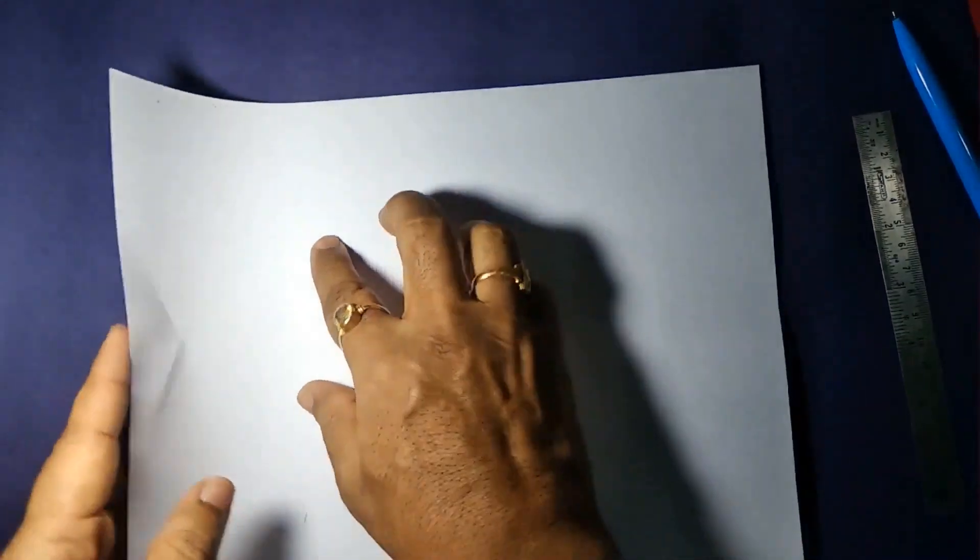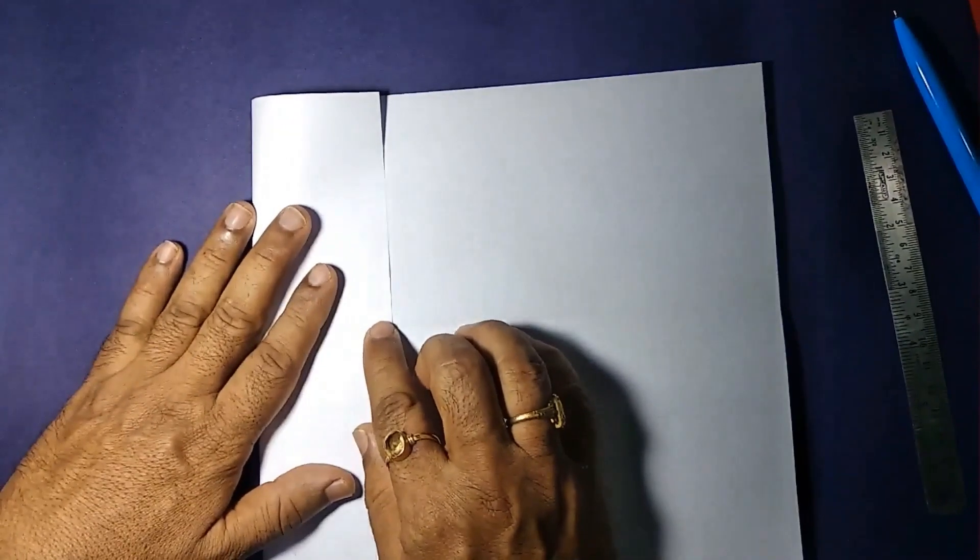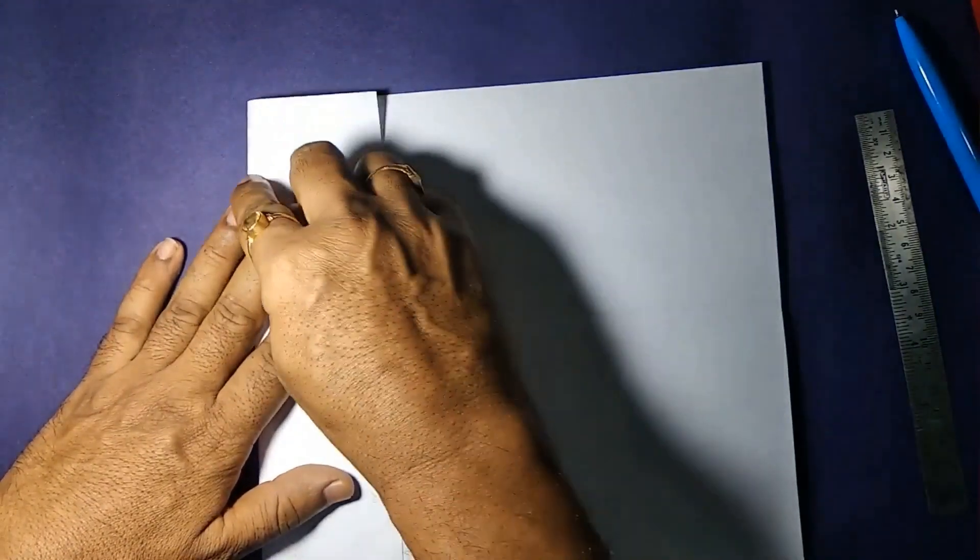We have taken an A4 sized paper, folded a horizontal central line to that. Now at some point we are making a vertical line to it.